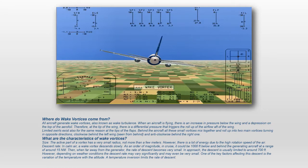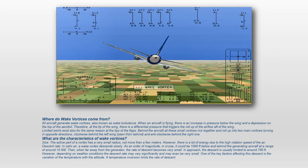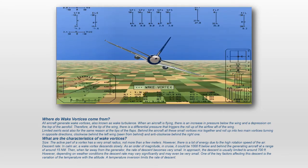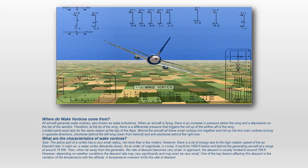Then, when far away from the generator, the rate of descent becomes very small. In approach, the descent is usually limited to around 700 feet. However, depending on weather conditions the descent rate may vary significantly and may even be very small. One of the key factors affecting this descent is the variation of the temperature with the altitude. A temperature inversion limits the rate of descent.